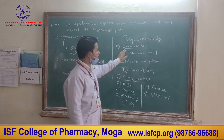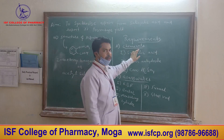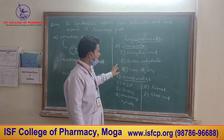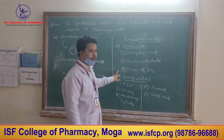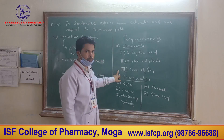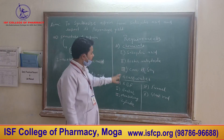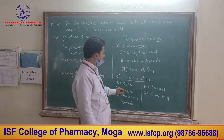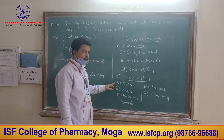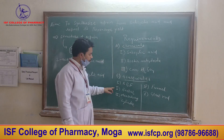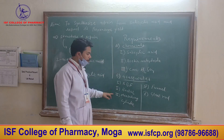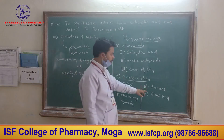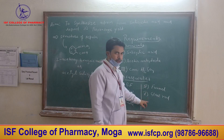First are the chemical requirements: salicylic acid, acetic anhydride, and concentrated H₂SO₄. The glassware requirements include a round bottom flask, beaker, measuring cylinders, funnel, and glass rods.